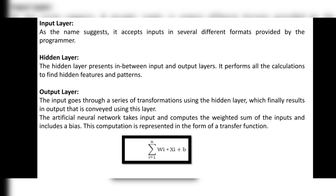Using the formula: the sum of wi times xi plus b, we can easily calculate the assignment of weights to a particular layer.